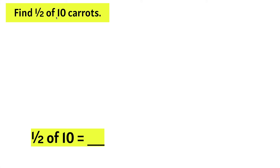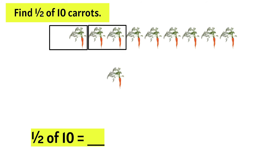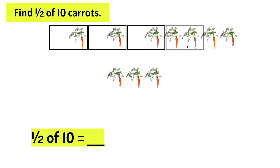Find half of 10 carats. We need part of a whole, or a fraction of a number. So, let's show 10 carats. Now, we only need half of them. So, let's go ahead and separate them into two because the denominator is a two. We need one out of every two carats. Two more and we need one out of every two, or half.